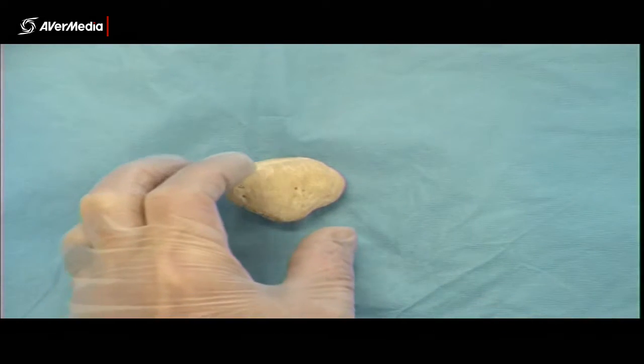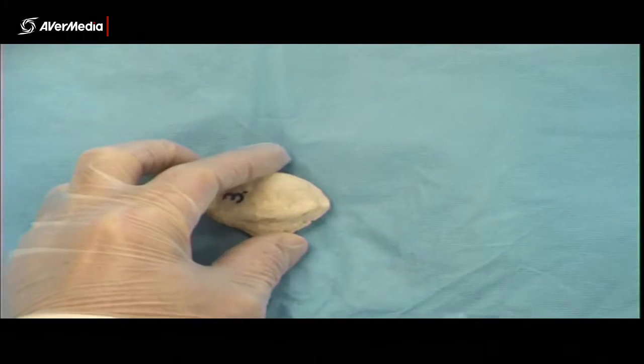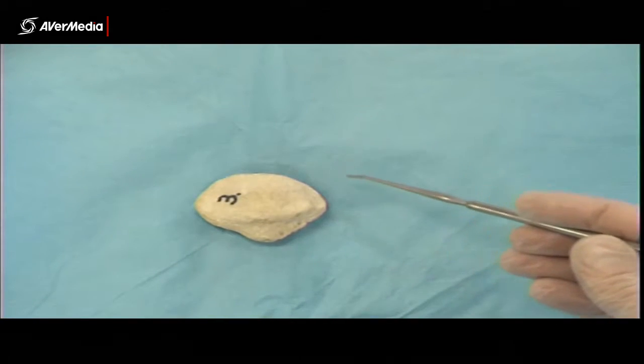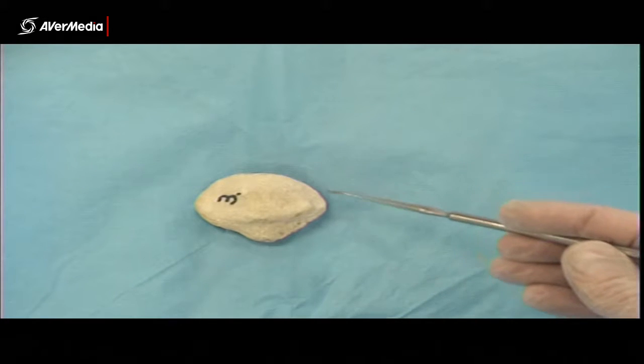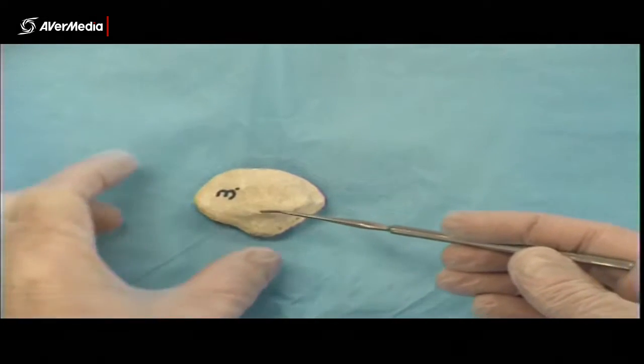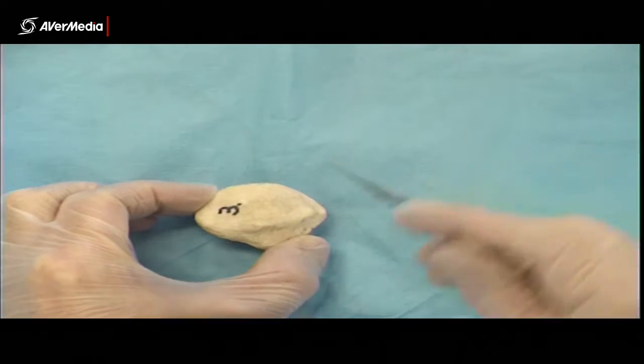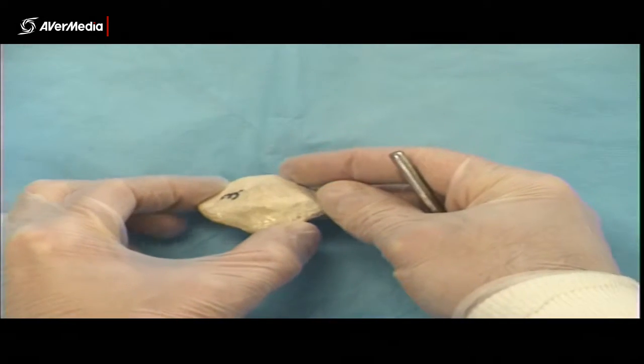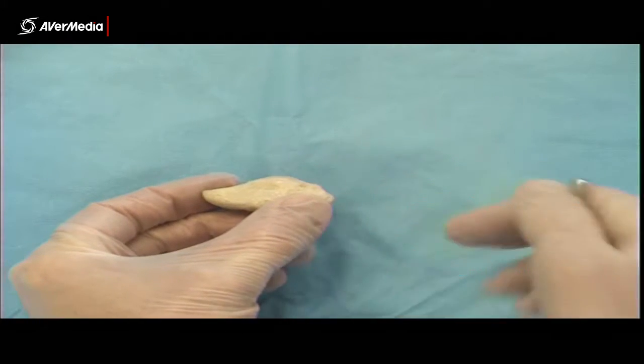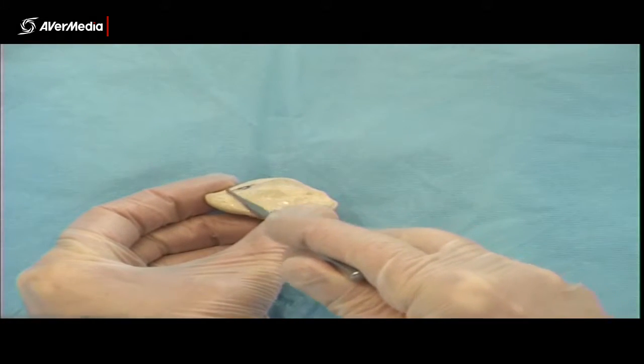We turn the patella over, now we're looking at the articular surface, which is most of the posterior surface. Notice that it has two facets. Now if we just turn the patella like so, hopefully now you can see that there's one facet pointing that way and one facet kind of pointing that way with a ridge in between.